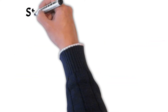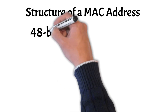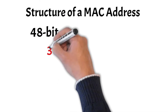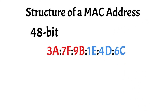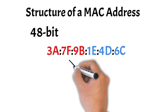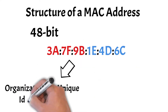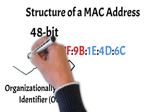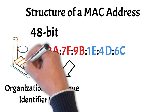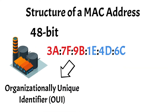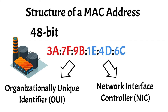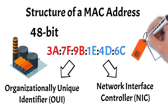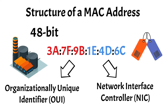Next, let's take a look at the structure of a typical MAC address. A MAC address is a 48-bit identifier typically formatted as six groups of two hexadecimal digits, separated by colons or dashes. This address is divided into two main components. The first 24 bits, known as the Organizationally Unique Identifier, or OUI, are assigned to the device's manufacturer. The OUI allows for the identification of the manufacturer and ensures that all devices produced by that manufacturer have a consistent prefix. The remaining 24 bits are the Network Interface Controller, or NIC, specific part, which provides a unique identifier for each device within the manufacturer's range. This combination of OUI and NIC-specific bits ensures that every network device has a unique MAC address, facilitating precise identification and reliable communication within a local network.